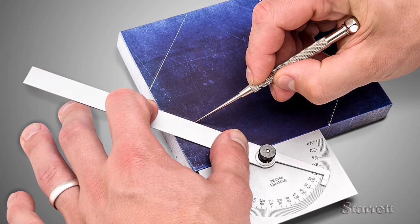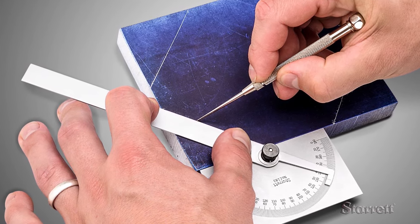Then, using the rule mark as a guide, scribe a 45 degree cut line on each corner.